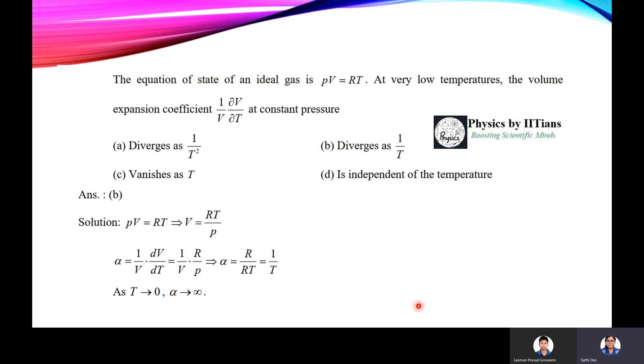Another question in the NET 2009 December paper, this is a very easy question. The equation of state of an ideal gas is PV equals RT. At very low temperature, the volume expansion coefficient, that is 1 by V del V by del T at constant pressure, diverges as 1 by T square, diverges as 1 by T, vanishes as T, or is independent of the temperature. Suppose they are not giving you the volume expansion coefficient expression 1 by V del V del T, but they can only mention that term.